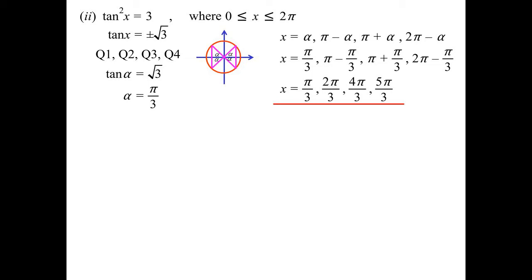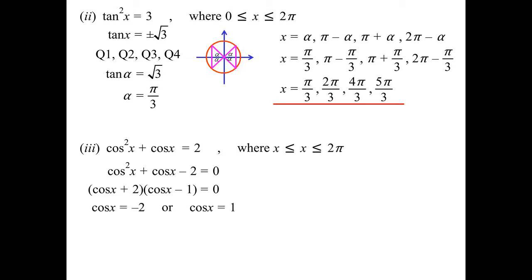cos² x + cos x = 2, this is one we can treat like a quadratic. What multiplies together to give -2 and adds together to give 1? Yeah, that factorizes nicely, so either cos x is -2 or cos x is 1.